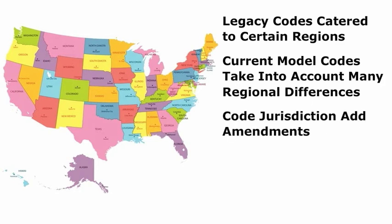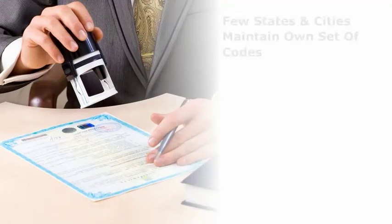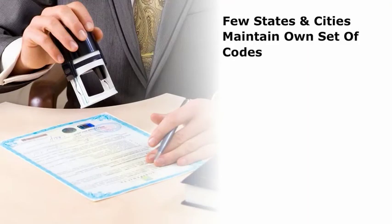In some cases, a code jurisdiction will add amendments to the code they adopt to create requirements unique to their area. There are a few states and cities that continue to maintain their own set of codes. However, even the differences between these customized codes are becoming less obvious as more jurisdictions are working closely with the code organizations.